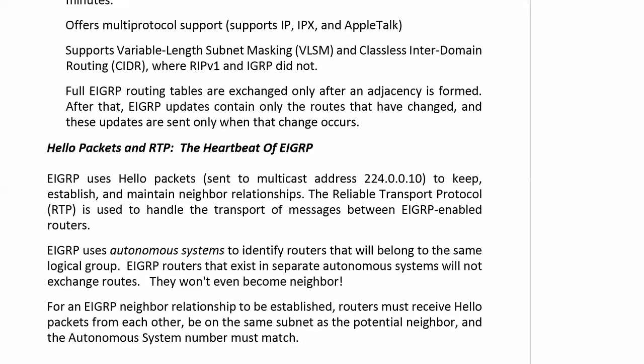EIGRP does have a hello packet for a heartbeat. Hello packets are multicast to 224.0.0.10 — an excellent address to have memorized — to establish and maintain neighbor relationships. The Reliable Transport Protocol (RTP) handles the transport of messages between EIGRP-enabled routers. EIGRP uses autonomous systems to logically group routers — similar to how OSPF uses areas. Routers in separate autonomous systems will not exchange routes and won't even become neighbors.